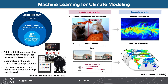Specific to climate modeling and earth science, there are applications where common machine learning tasks — which often have to do with image processing, recognition, and video prediction — can actually be applied to different earth science tasks. This paper goes through that motivation in more detail.